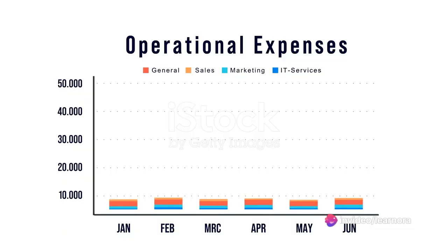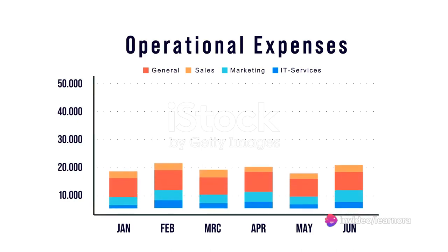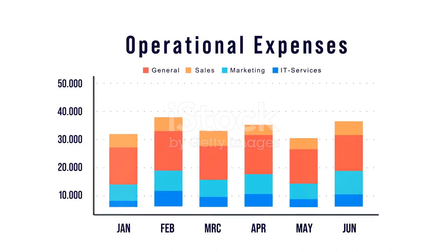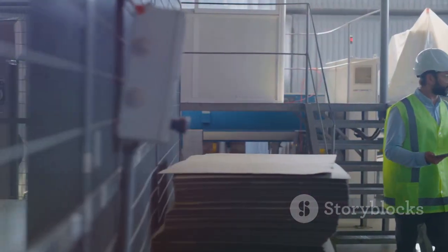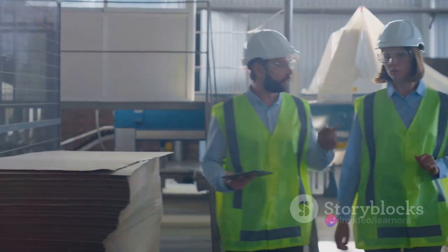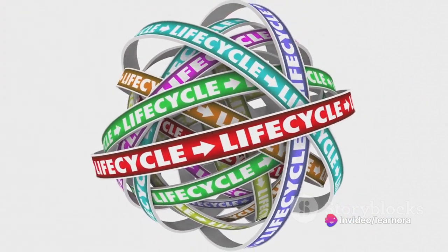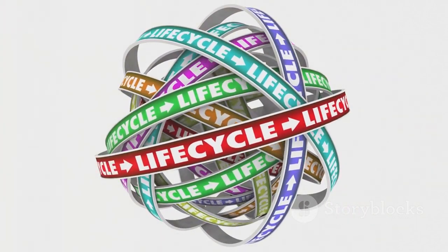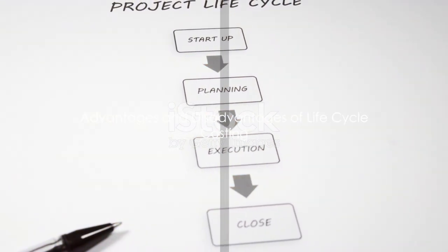Upstream costs are those incurred as a company prepares to start its production process, like raw materials and research and development. Production costs come after the purchase, including operating and maintenance expenses. Downstream costs are those incurred after the production process is completed, such as distribution expenses and marketing plans.